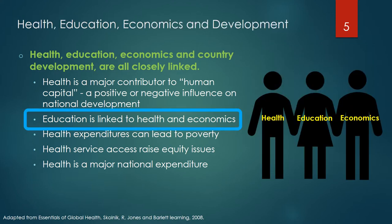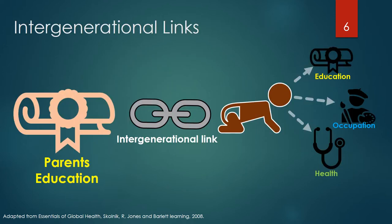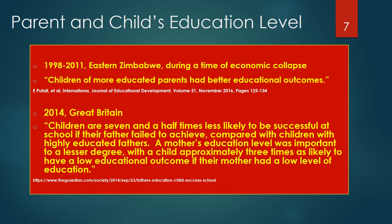A parent's educational level is commonly linked to and predicts their child's future education level, occupation and health. This is commonly defined as an intergenerational link. Pufal et al. studied links between the education of parents and their children in Zimbabwe from 1998 to 2011, a time of economic collapse in the country. Throughout the period, children with more educated parents continued to have better outcomes.